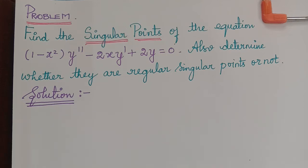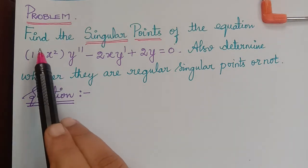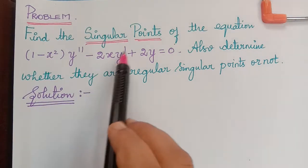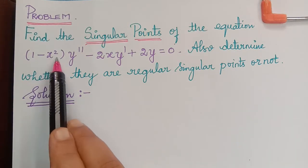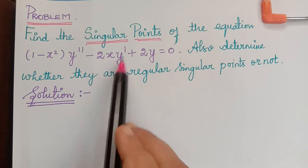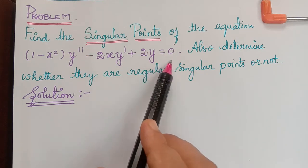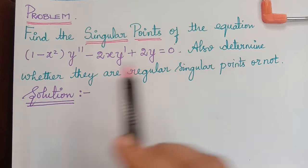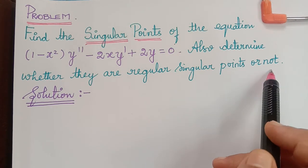Dear students, under the topic linear equations with singular points, here we have a problem which says: find the singular points of the equation (1 minus x squared) y double dash minus 2x y dash plus 2y is equal to 0. Also, determine whether they are regular singular points or not.